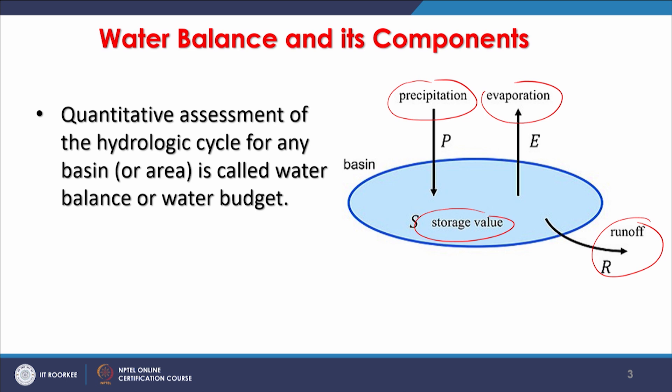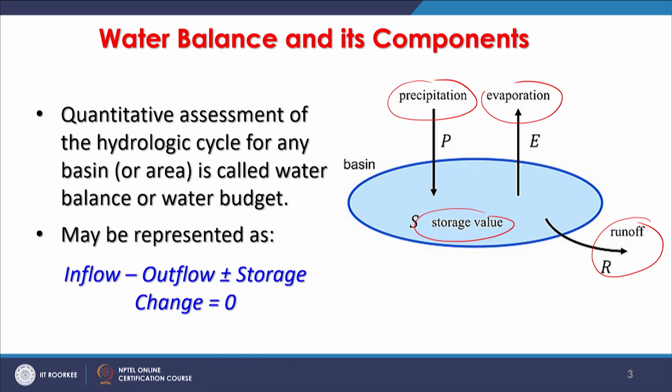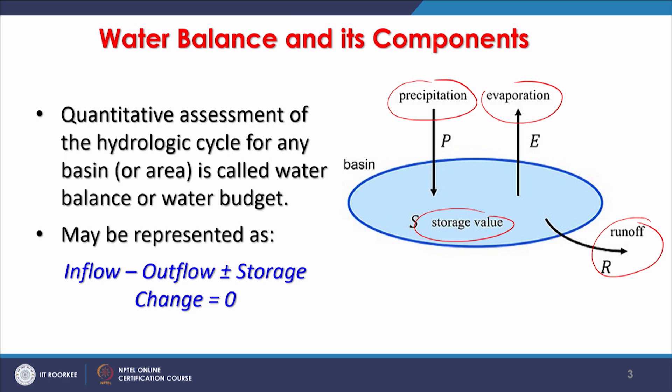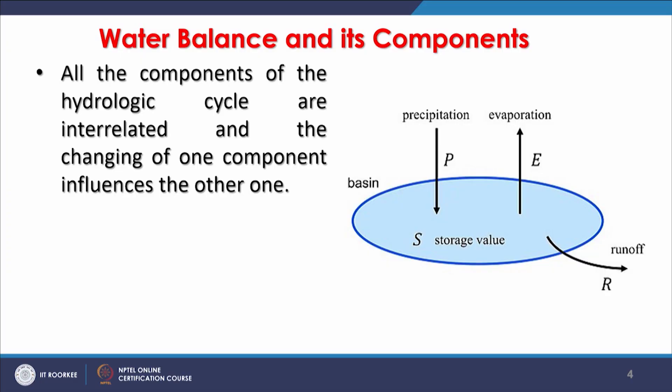So that groundwater becomes available all year round, budgeting must be done properly and measures taken accordingly. It can be represented simply as: inflow minus outflow plus or minus storage change equals zero — this makes the water balance. All components of the hydrologic cycle are interrelated and dynamic; a change in one component influences the others. If more precipitation occurs, storage will increase and the budget will change accordingly.